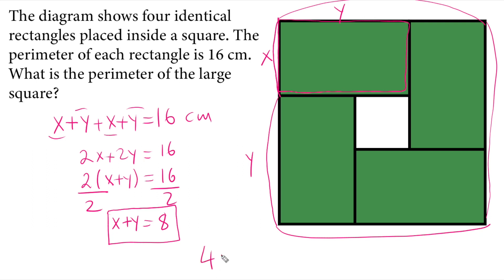Four times (x plus y) must equal the perimeter. We know the x plus y value from the perimeter calculation of each rectangle. Four times 8 equals 32 centimeters is our solution. I hope you liked the question and enjoyed the video.